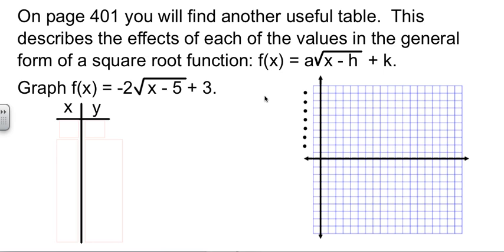So we are going to graph f(x) equals negative 2 times the square root of x minus 5 plus 3. First we need to figure out the smallest value in our domain. What would make this equal 0 is x equals 5. And when x equals 5, we have 0, the square root of 0 is 0, times negative 2 is 0, plus 3 is 3. So we have our first point, (5, 3).